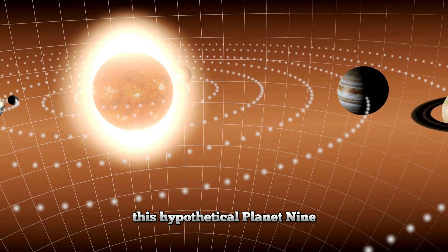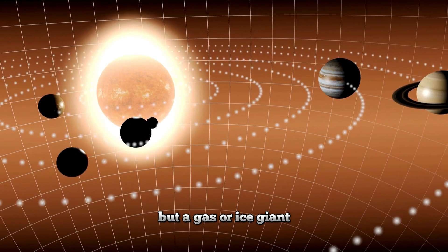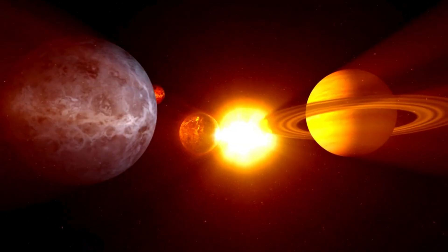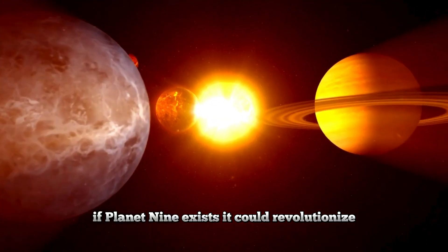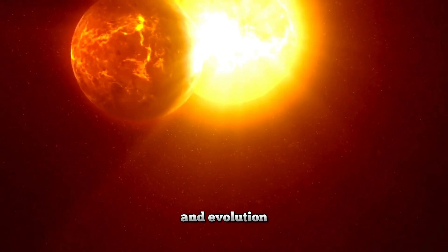This hypothetical Planet Nine is not just a distant cousin of Pluto, but a gas or ice giant that could be billions of miles away from the sun. If Planet Nine exists, it could revolutionize our understanding of the solar system's formation and evolution.